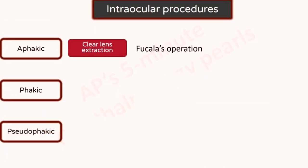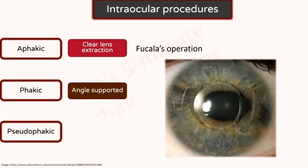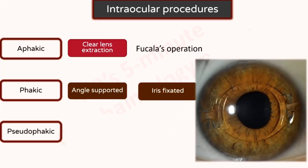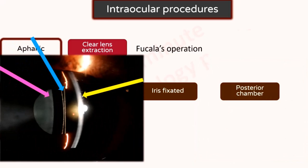Clear lens extraction in a patient with about 16 to 18 diopters of myopia can give reasonably good vision, as the hypermetropia of aphakia counterbalances the high myopia. Fucala was the first person to use this method extensively. Phakic IOLs, or implantable contact lenses, are IOLs placed in the eye without removing the crystalline lens. They may be classified as anterior chamber lenses — either angle-supported or iris-fixated — and posterior chamber lenses. Phakic IOLs can correct up to 20 diopters of myopia and some up to about 12 diopters of hypermetropia.